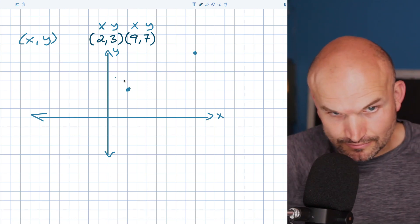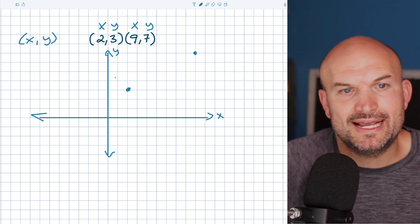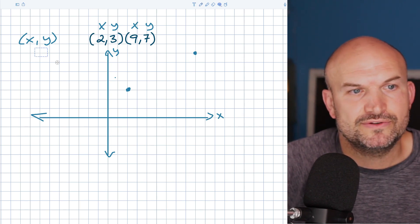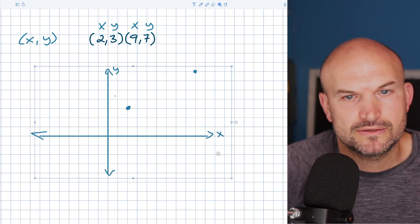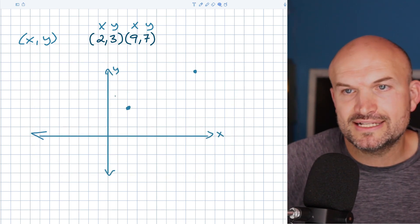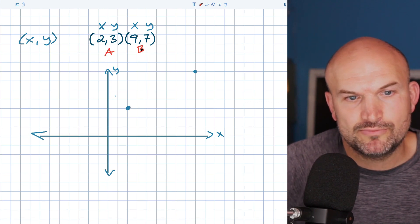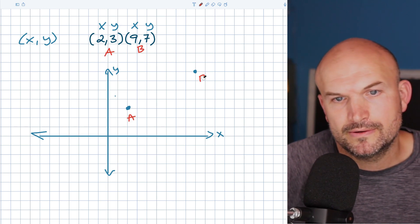Let's go ahead and let's see if I can do this correctly. I want to move this down a little bit. Let's go ahead and label this as point A and point B.